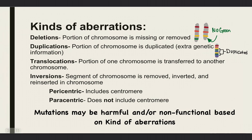Next, let's talk about the kinds of aberrations. First, we have deletions, and these occur when a portion of a chromosome is missing or removed. Duplications occur when a portion of a chromosome is duplicated. Translocations occur when a portion of one chromosome is transferred to another chromosome. And today we'll be looking at an example of inversions, which occur when a segment of a chromosome is removed, inverted, and reinserted in a chromosome.